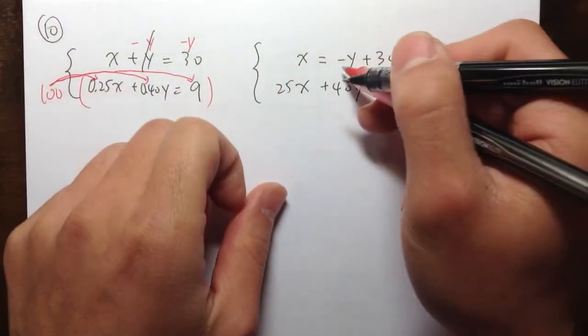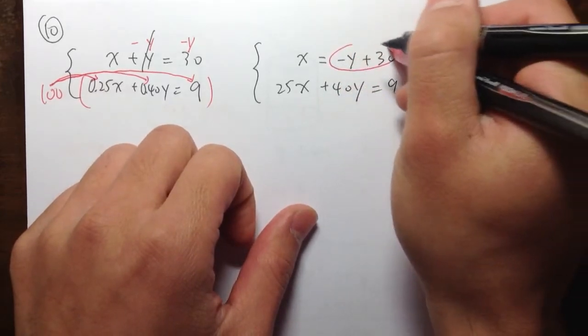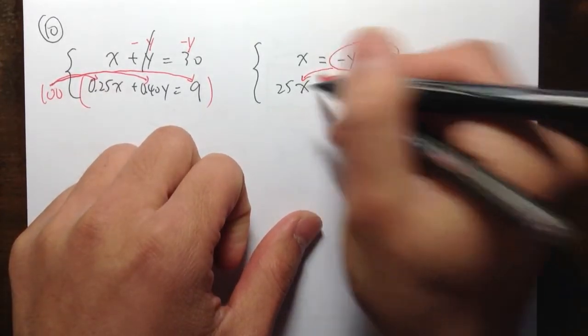And now, we know that x is equal to negative y plus 30. So, we can take this, and then we can plug it into the second equation for x.